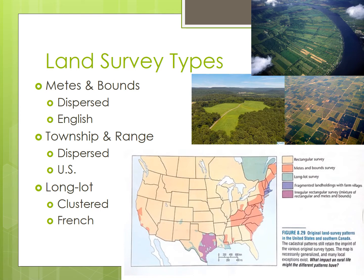The long-lot system is found in parts of North America that were colonized by the French, such as Quebec and Louisiana. The basic unit is a rectangle, typically ten times larger than it is wide. Farms were long, thin sections of land that ran perpendicular to a road, river, or canal, so that every farmer had land, water, and access to some transportation system. We also see this system in parts of Texas and northern New Mexico, as well as in the hills and marshes of Central and Western Europe, and in parts of Brazil and Argentina.